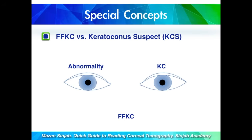What is the difference between forme fruste keratoconus and keratoconus suspect? They are actually the same from the topographical point of view. When the abnormality is in one eye and the other eye has keratoconus, we call this forme fruste keratoconus. But when the abnormality is in one eye and the other eye is totally normal, we call it keratoconus suspect. The same applies when the abnormality is in both eyes. So forme fruste keratoconus is when one eye shows abnormality and the other eye shows keratoconus; otherwise we call it keratoconus suspect.